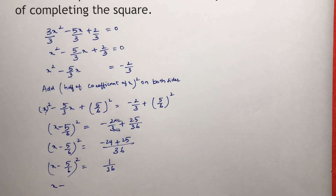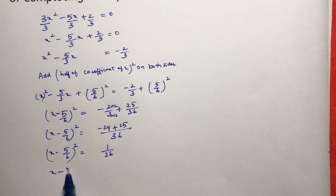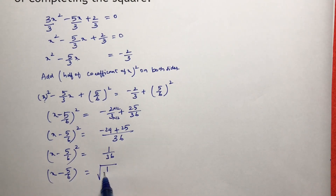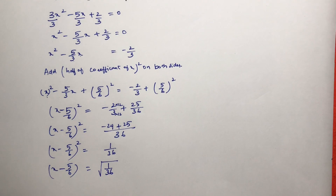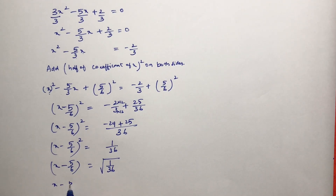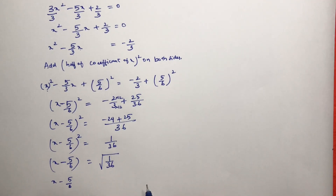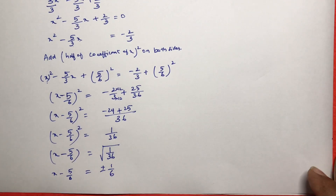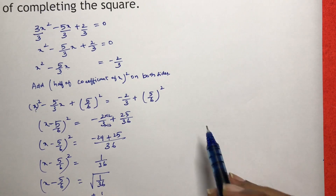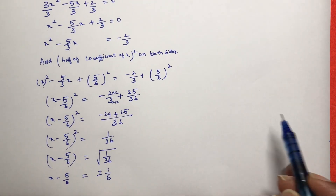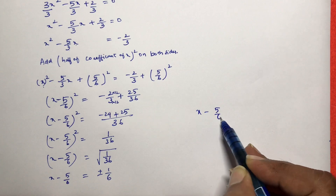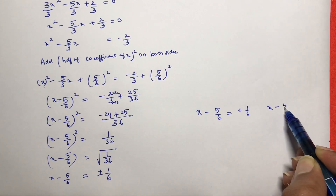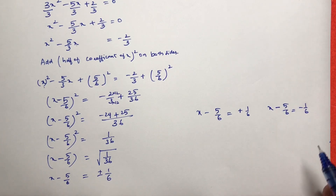Taking the square root of both sides: x minus 5/6 equals plus or minus 1/6. So we write two cases: x minus 5/6 equals plus 1/6, and x minus 5/6 equals minus 1/6.